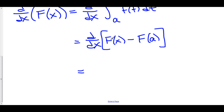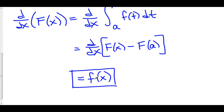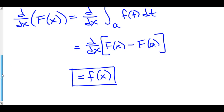The derivative of big F of x is little f of x. As for the derivative of big F of a — a is a constant, and when you plug any number into a function, you get just another number. The derivative of a constant is zero. So the derivative of big F of x is equal to little f of x.